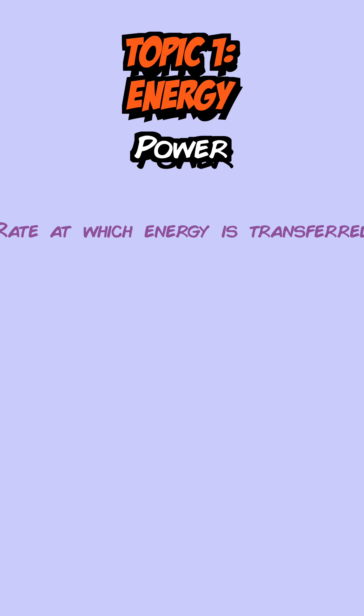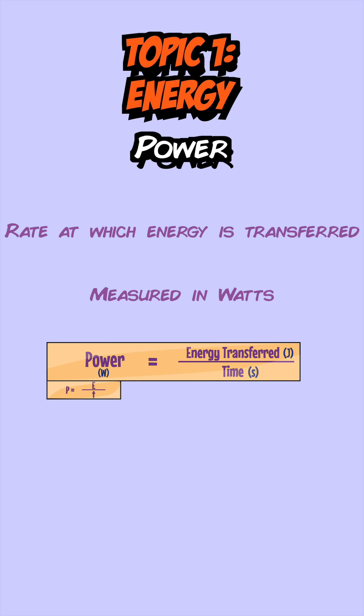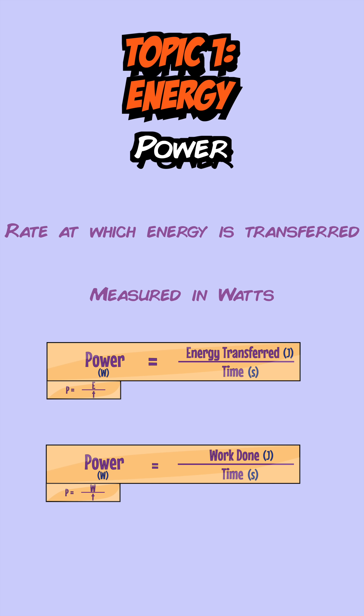Power is defined as the rate at which energy is transferred and is measured in watts. Energy transferred is the same as work done, so the two equations for power are: power equals energy transferred over time, and power equals work done over time.